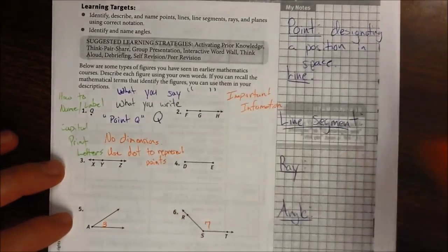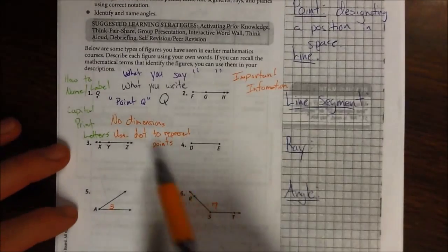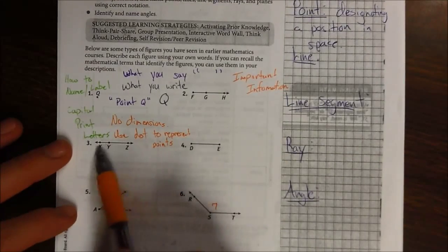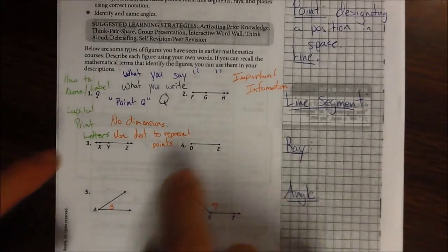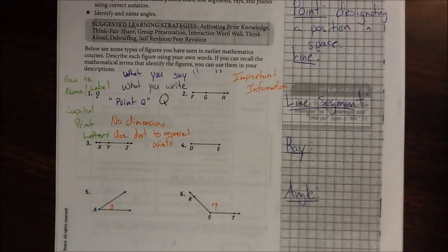I'm going to skip number two for now. I'm going to jump down to number three. Number three, we see that we have three points that are on this line. And then we have these two arrowheads. So this is just a line.